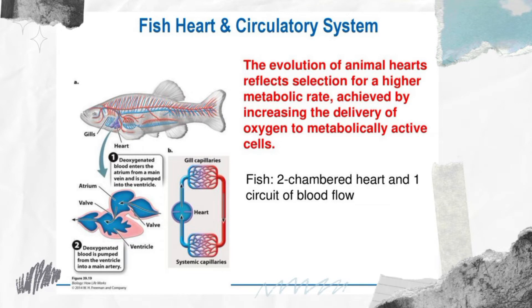A bony fish's heart has two chambers: an atrium and a ventricle. The venous side of the heart is preceded by an enlarged chamber called the sinus venosus, and the arterial side is followed by a thickened muscular cavity called the bulbus arteriosus. The sinus venosus receives oxygen-depleted blood from the body, and a valve at the end of the sinus venosus opens into the atrium.